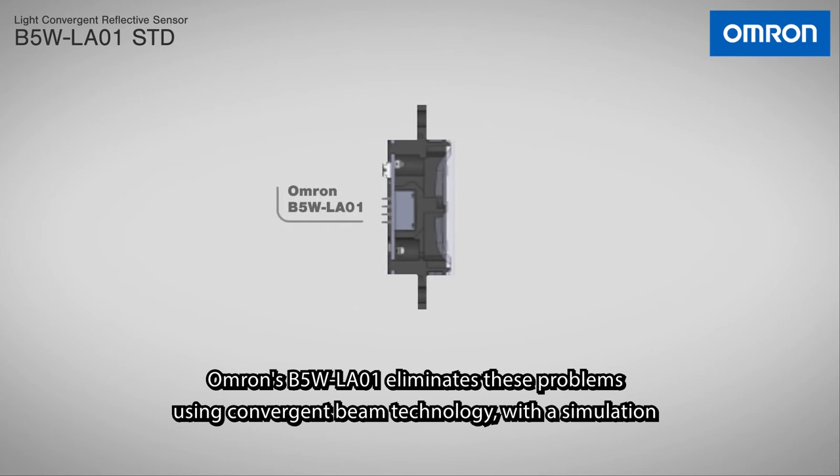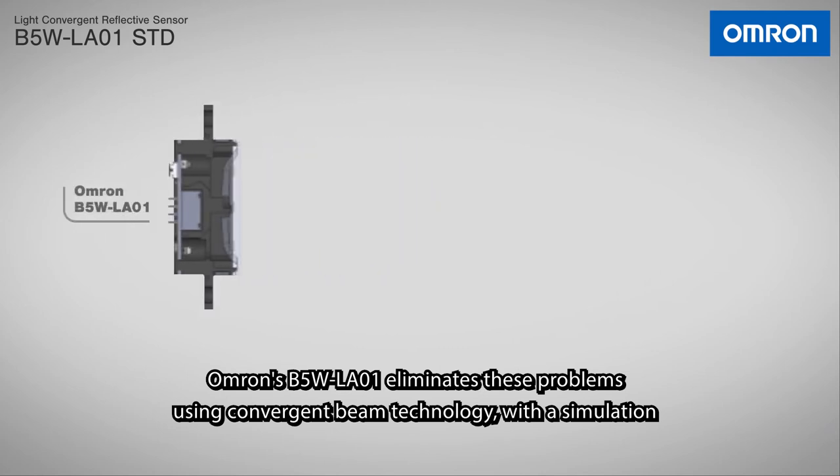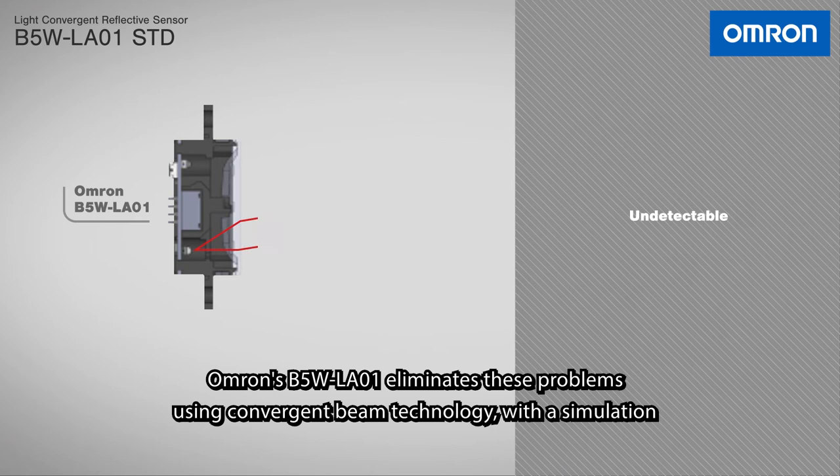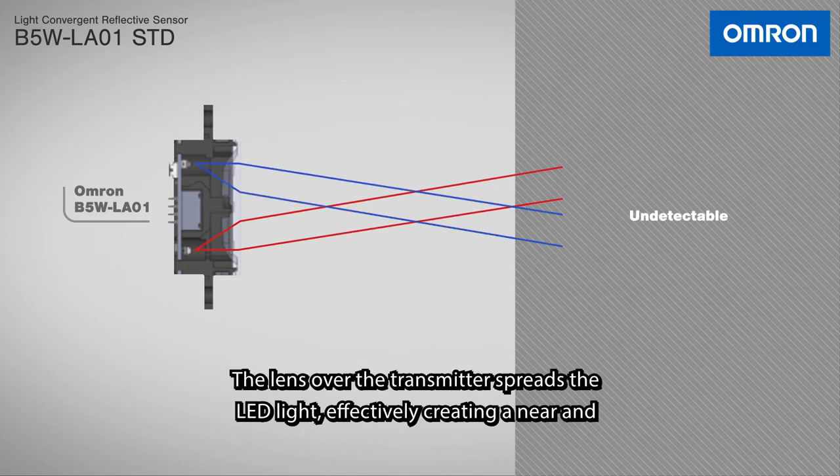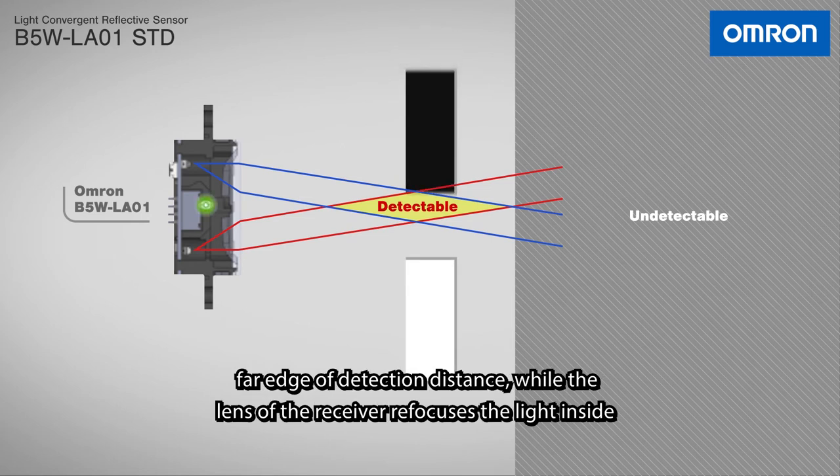Omron's B5W LA-01 eliminates these problems using convergent beam technology with a simulation optimized lens system. The lens over the transmitter spreads the LED light, effectively creating a near and far edge of detection distance.